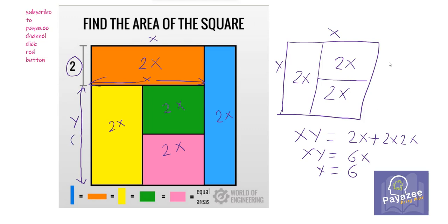Let's put this here as 6. Now we know that this is the square. So 2 plus 6 equals 8. And the area of this square is 8 squared, 8 into 8, 8 into 8 equals 64.